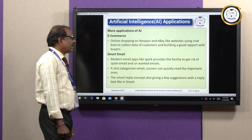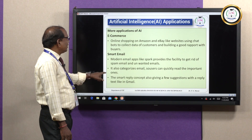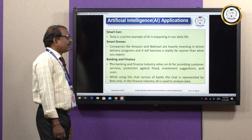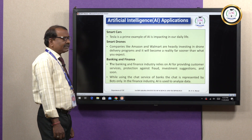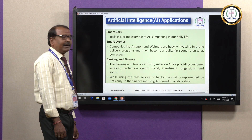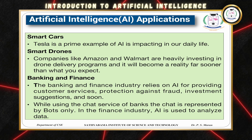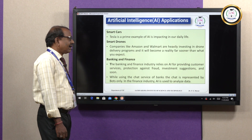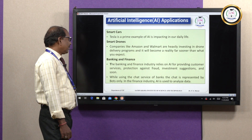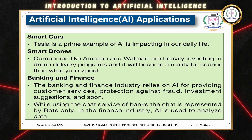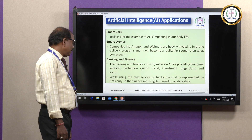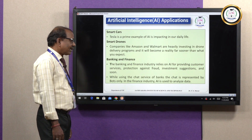Smart reply concepts also give a few suggestions with reply text, as in Gmail. Smart cars — Tesla has already provided smart cars as a prime example of artificial intelligence. Smart drones — government organizations and private industries have developed smart drones; companies like Amazon and Walmart are heavily investing in drone delivery programs. In the banking and finance sector, the industry relies on AI for providing customer services, protection against fraud and investment suggestions. Chat services in banks are represented by bots only, and in the finance industry, AI is used to analyze data.